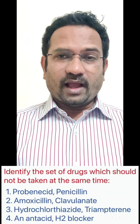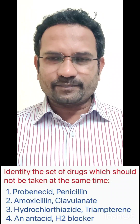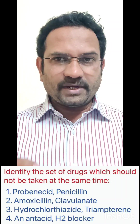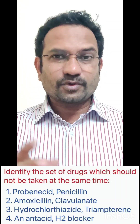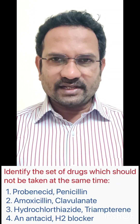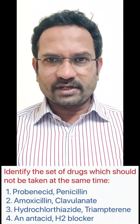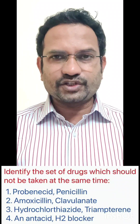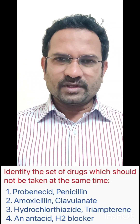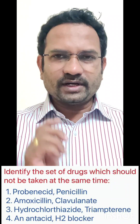The first question: identify the set of drugs which should not be taken at the same time. Read the question tag carefully — it's about a co-administration problem. The options are: probenecid and penicillin; amoxicillin and clavulanic acid; hydrochlorothiazide and triamterene; and an antacid with an H2 blocker. Let's analyze every option.